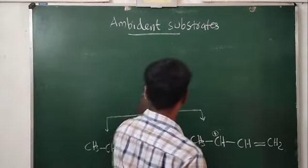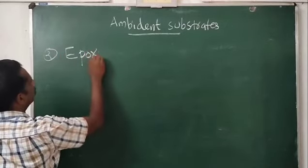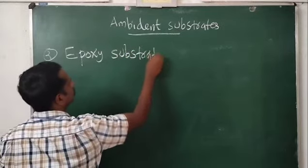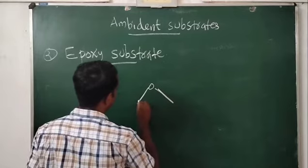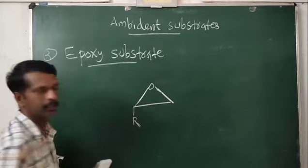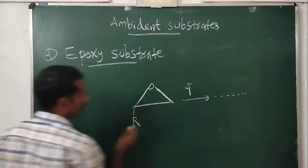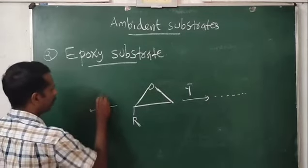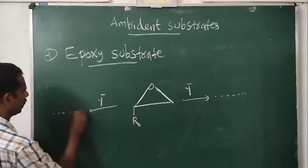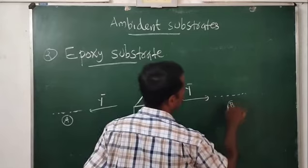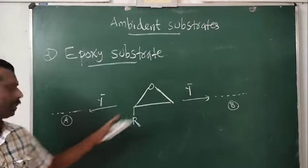The second type is epoxy substrate. This is an epoxy substrate. When a nucleophile Y⁻ comes, it can attack at different positions and we get two different products. The nucleophile Y⁻ can attack at one position and give product A, or attack at a different position and give product B.